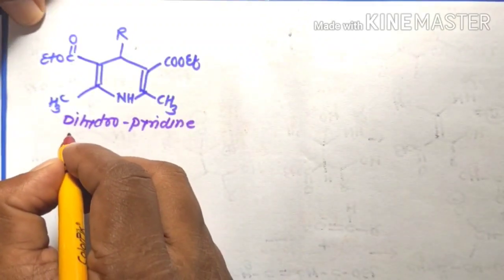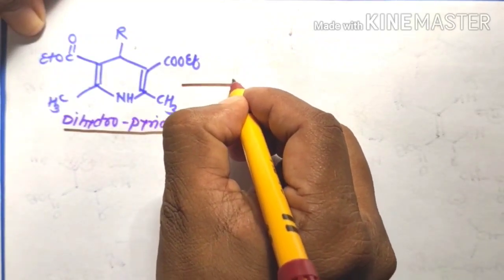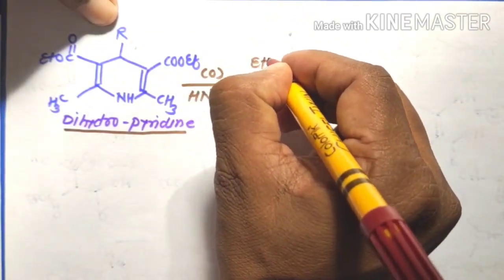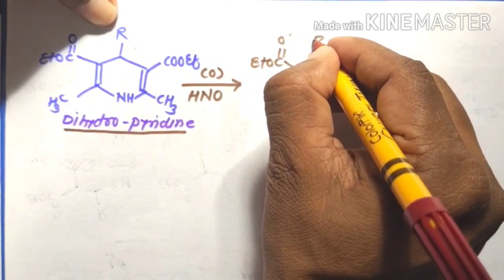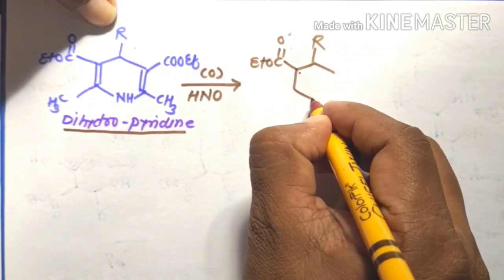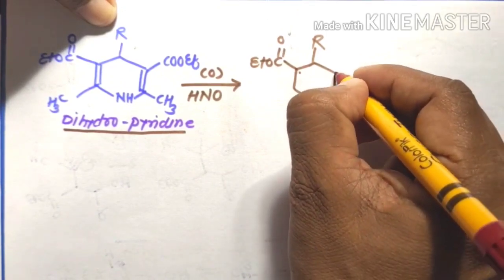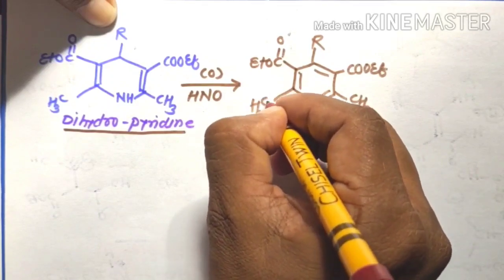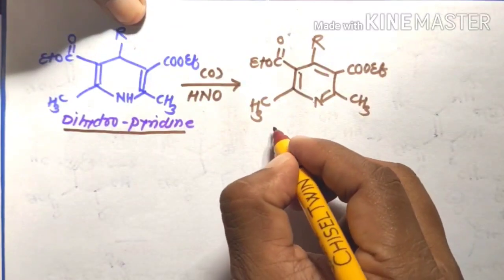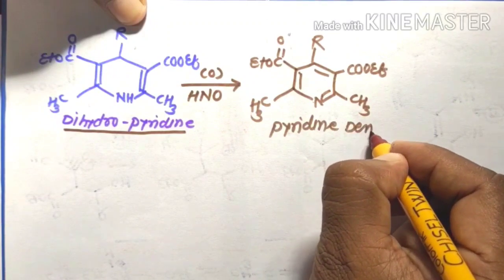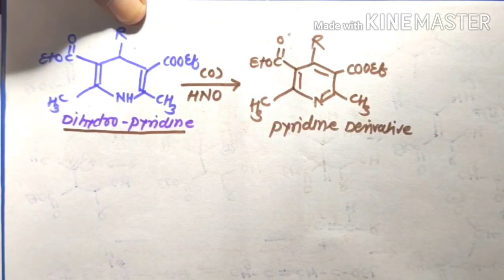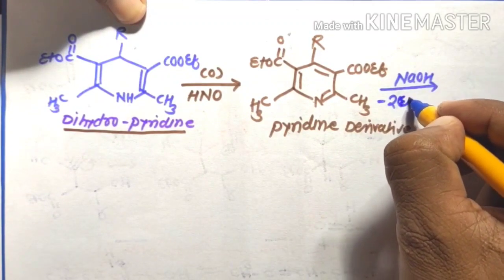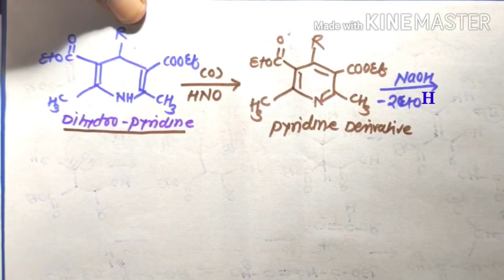The dihydropyridine derivative from step 3 is oxidized in the presence of an oxidizing agent like HNO3 to form the pyridine derivative, with structure EtOOC-[pyridine ring with R and CH3 substituents]-COOEt. This pyridine derivative is then hydrolyzed in the presence of NaOH (alkali) to eliminate 2 mol of ethanol and give the sodium salt of the pyridine derivative.